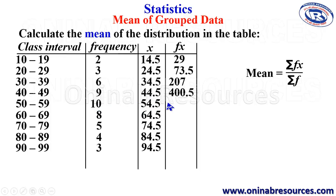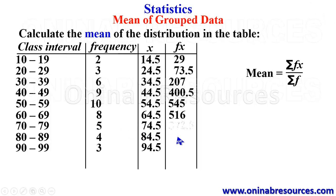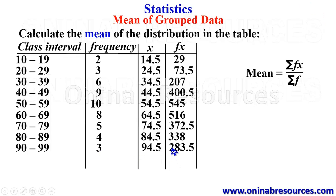Continuing the FX column: 10 times 54.5 gives 545. 8 times 64.5 gives 516. 5 times 74.5 gives 372.5. 4 times 84.5 gives 338. And 3 times 94.5 gives 283.5.